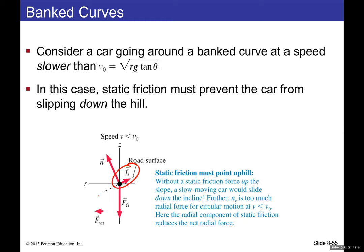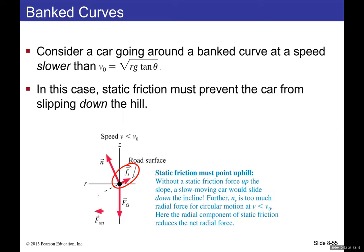Importantly, mass cancels out in both the flat and banked road equations. This means it doesn't matter whether the vehicle is a bicycle or a truck — the same designated speed applies to all. That's why road signs show one speed limit for all vehicles regardless of mass.